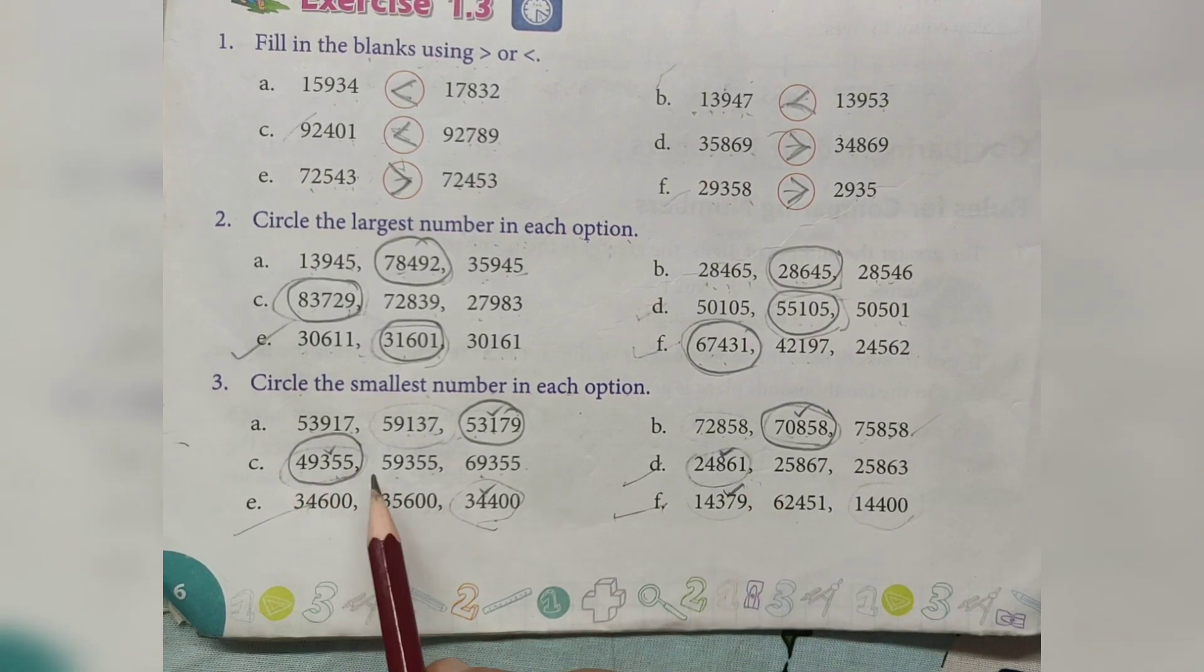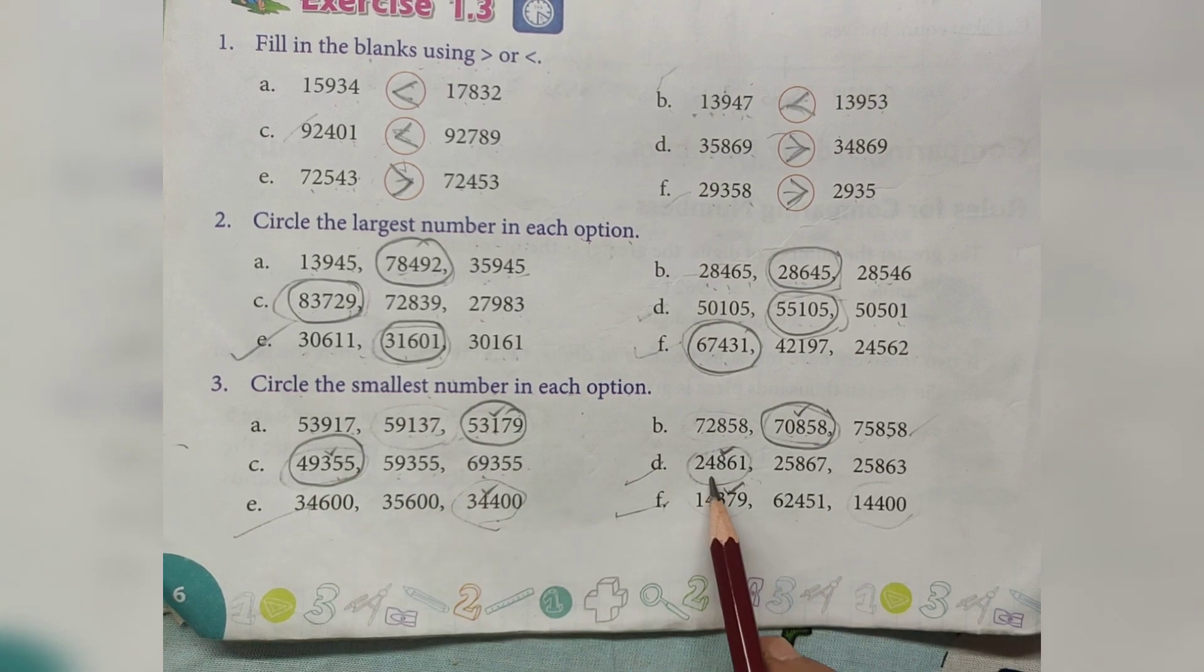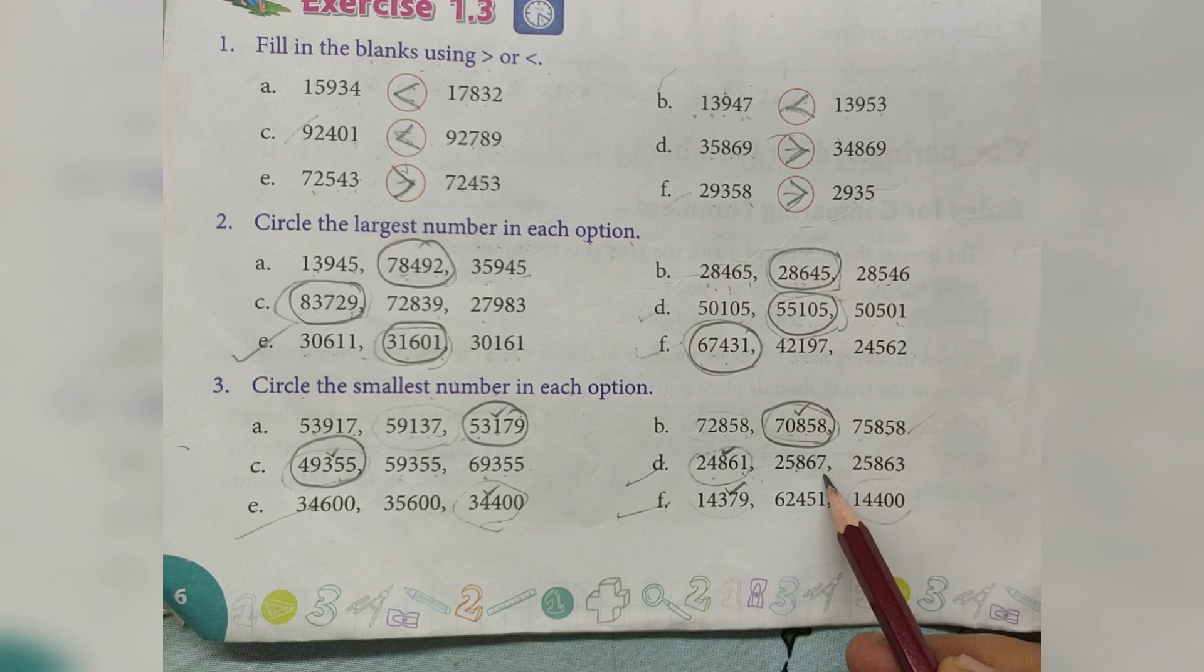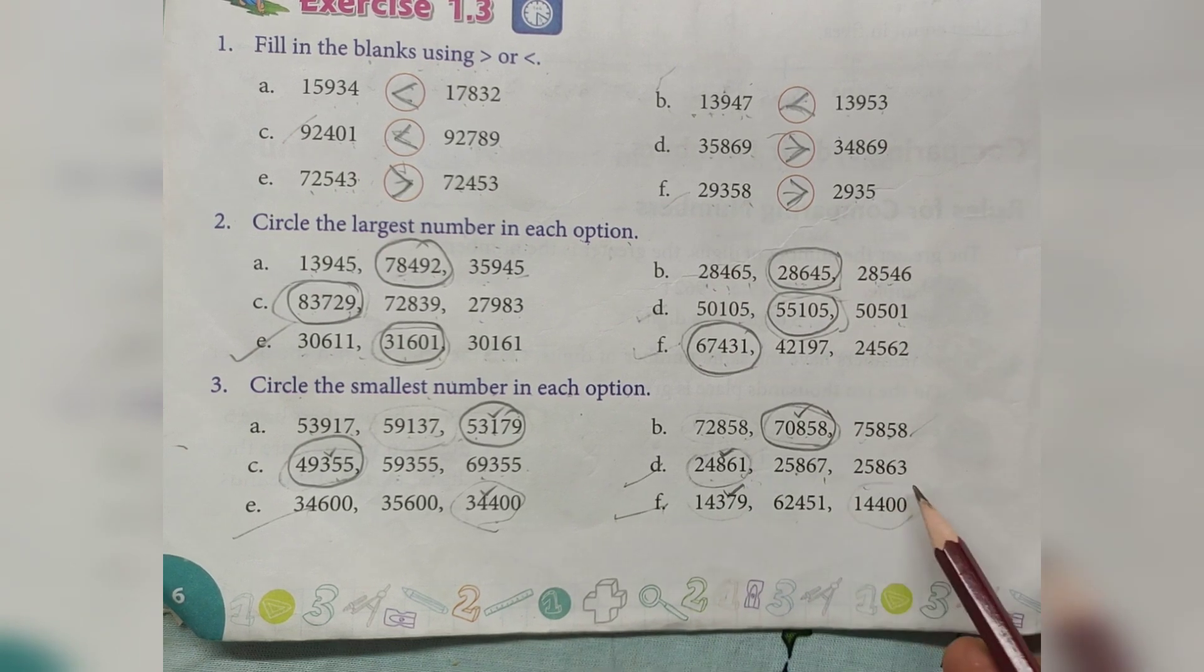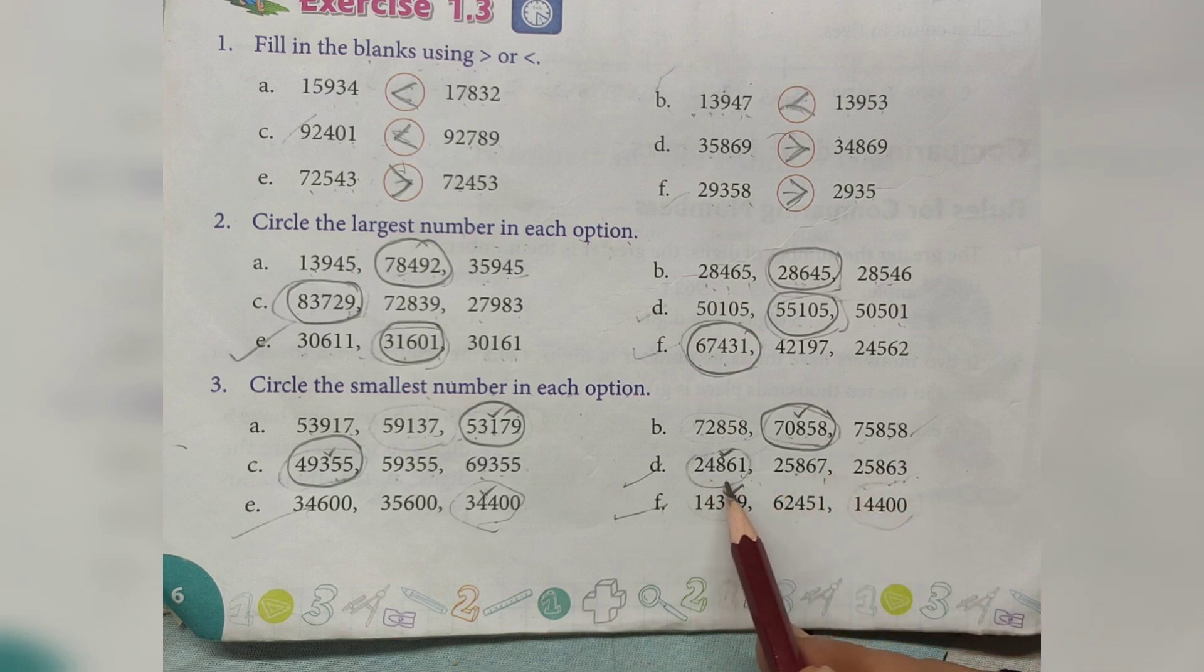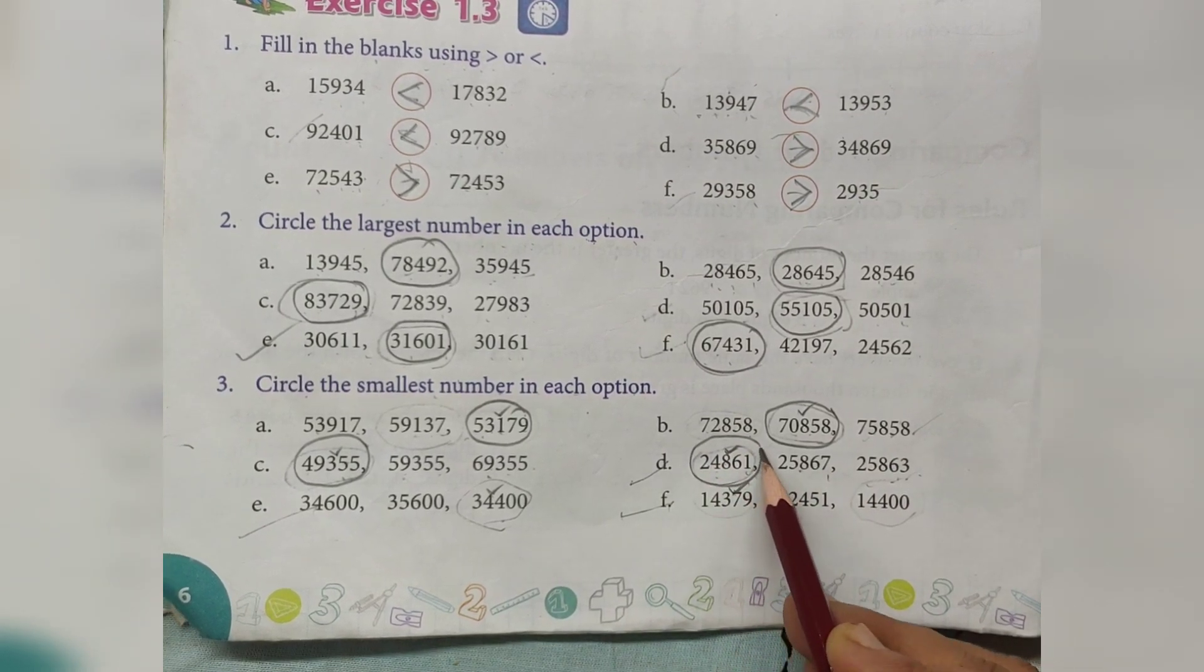24,861, 25,867, 25,863. Circle the smallest number, 24,861.